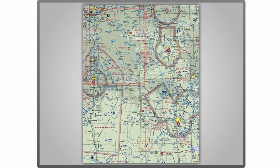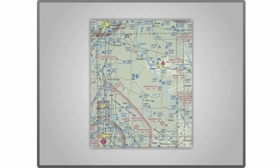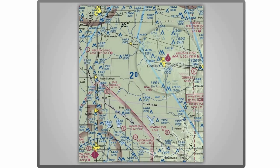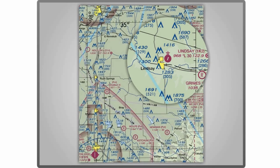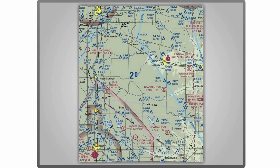Now let's zoom in again and work a test question: What is the latitude and longitude of the Lindsay Airport? To figure this, we need to first identify the four bounding lines of latitude and longitude. The line of longitude on the left is labeled — it's 98 degrees. The line of latitude at the top is also labeled — it's 35 degrees.